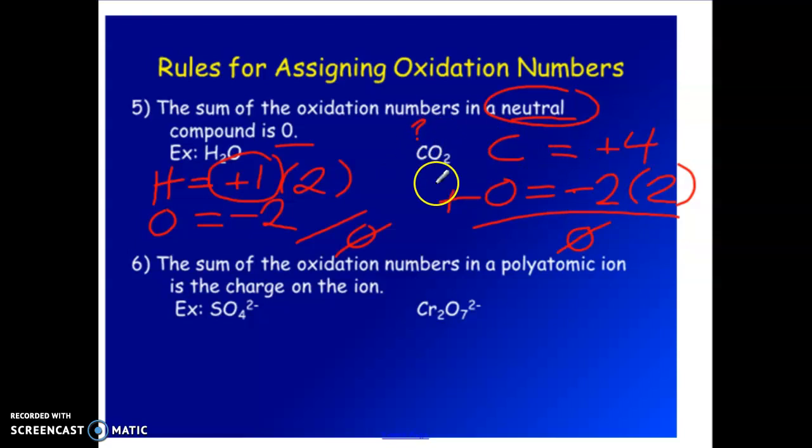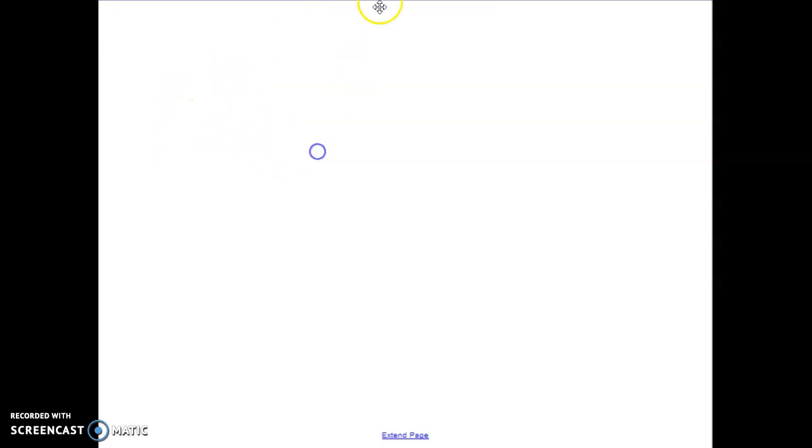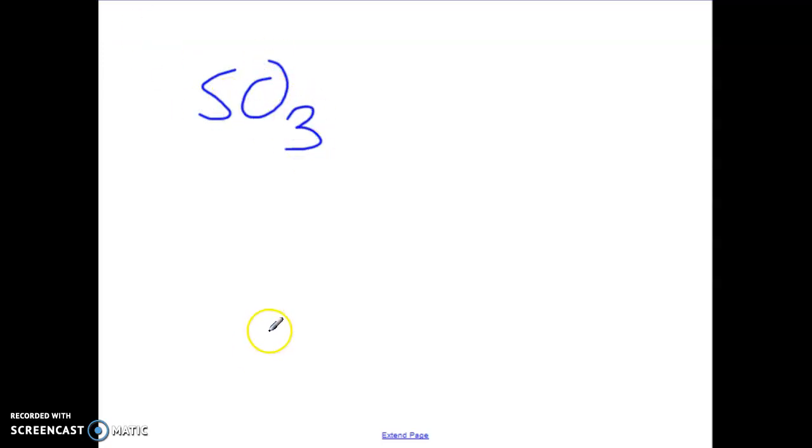So if you have a neutral structure, let's do one more example. Let's say we had sulfur trioxide. So sulfur trioxide is a neutral structure. Each oxygen is negative two, but there are three of them. So that would give us a total of negative six. Sulfur in that case has to be positive six to balance out the negative six from those three oxygens. So you'll always have enough information that you can figure out the other element through process of elimination.